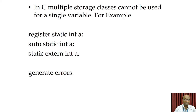For example, 'register static int a', 'auto static int a', or 'static external int a' — these combinations of two storage specifiers for a single variable are not acceptable and will generate errors. These are the four storage class specifiers in C: auto, static, external, and register. Thank you.